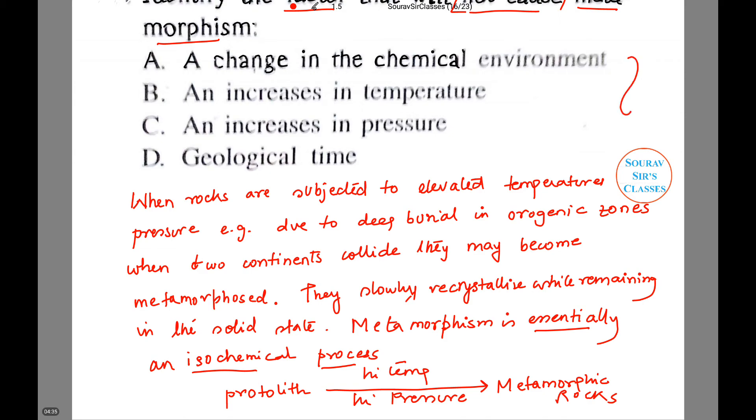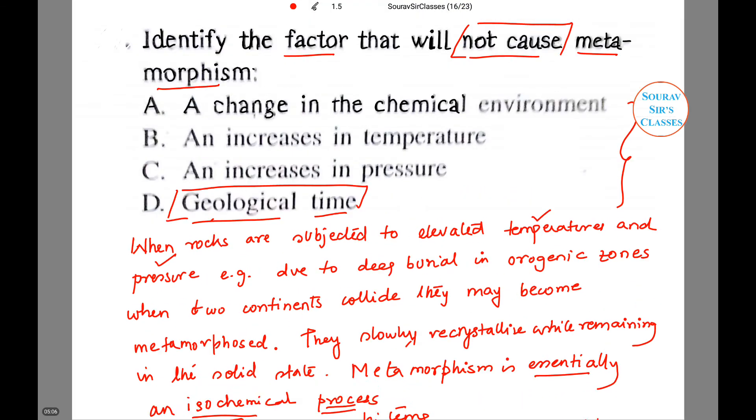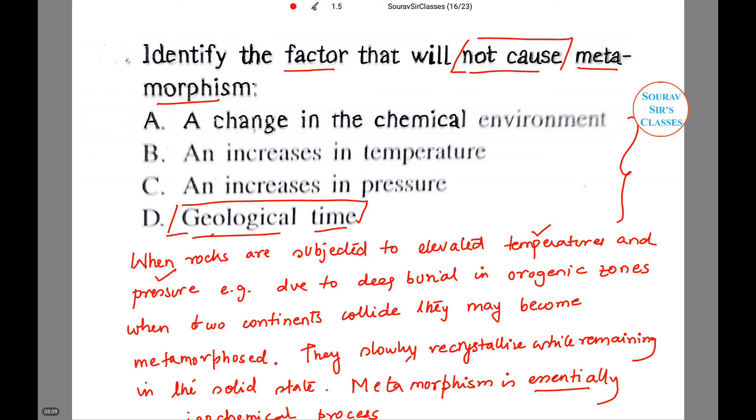So if you look at the different options given to us in the question, the factor that will not cause metamorphism... so D will be the correct answer.